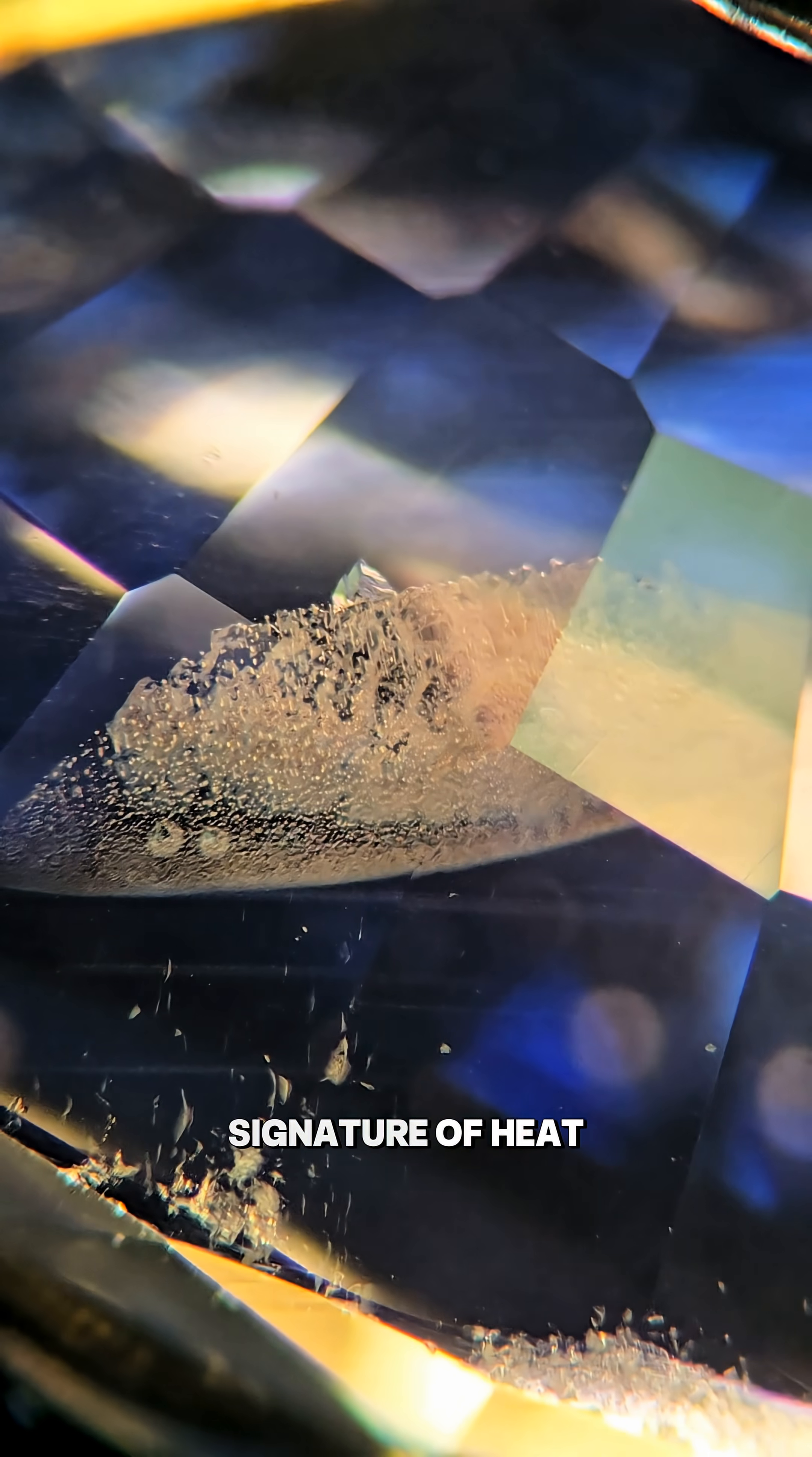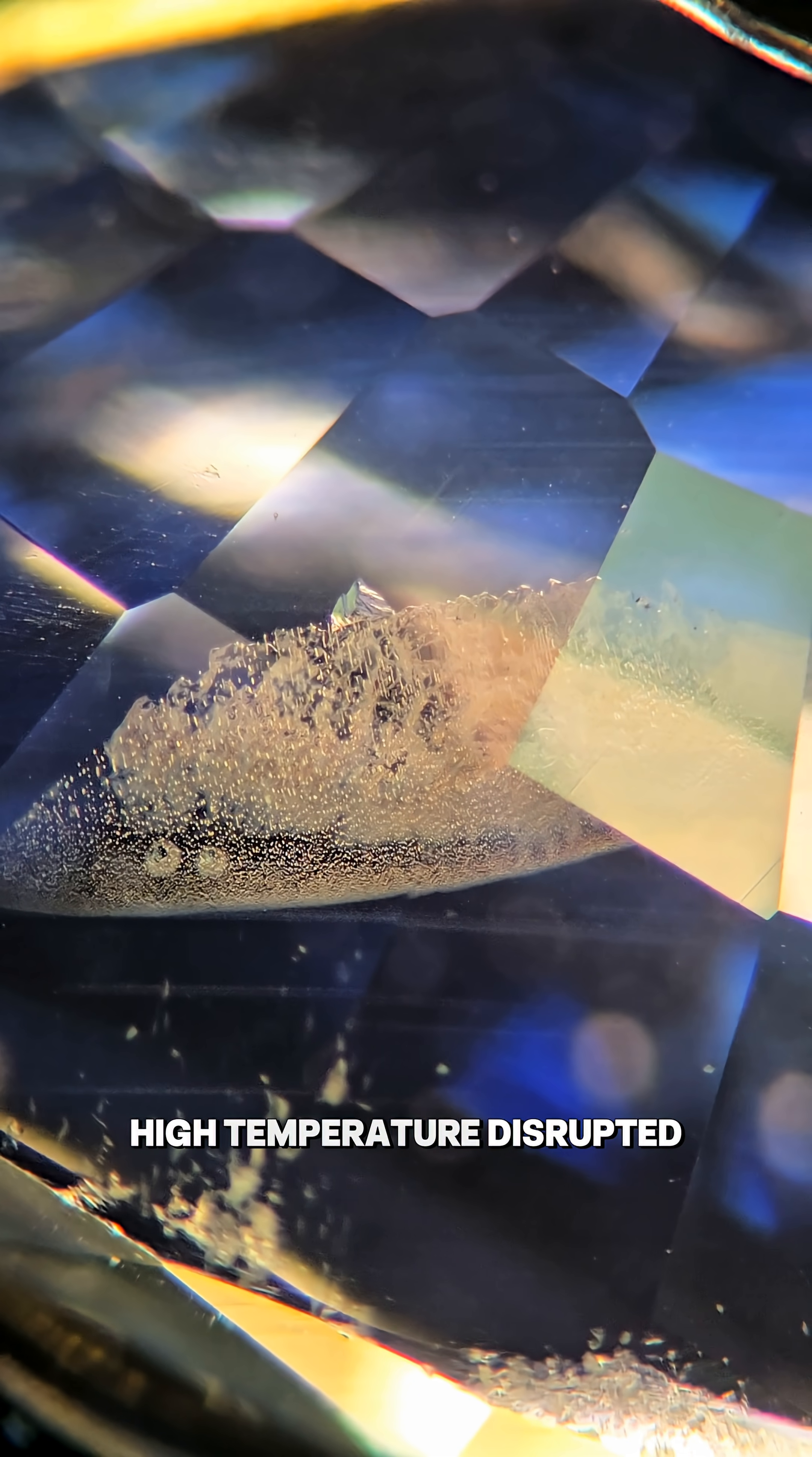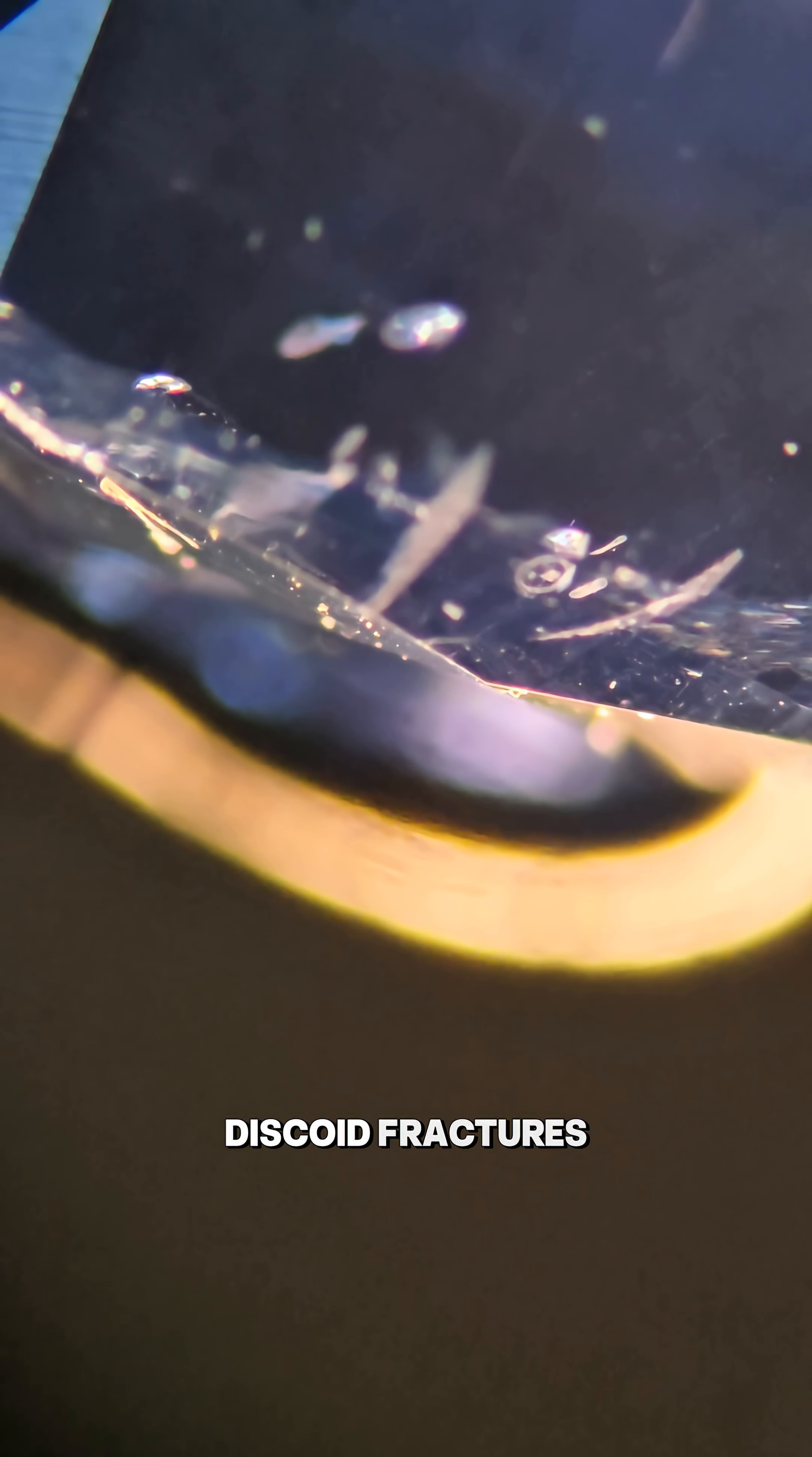This is the signature of heat treatment. In an untreated sapphire, these fingerprints would be perfectly preserved—crisp, intact. But here, the high temperature disrupted them. Inclusions ruptured, creating this cloudy, melted appearance combined with the discoid fractures.